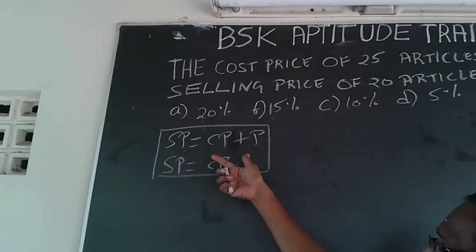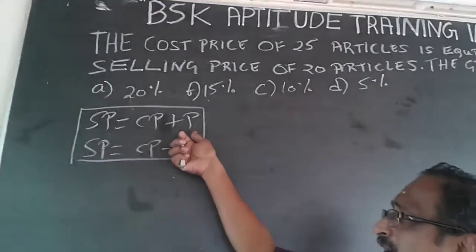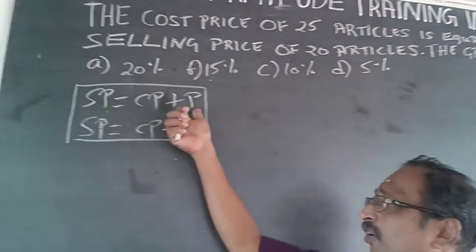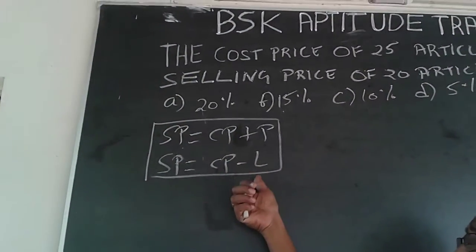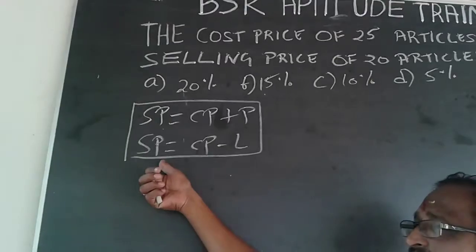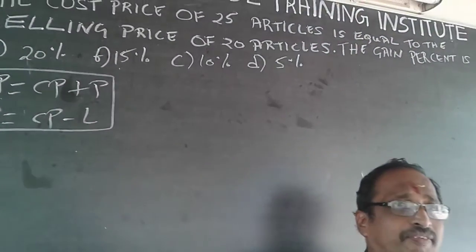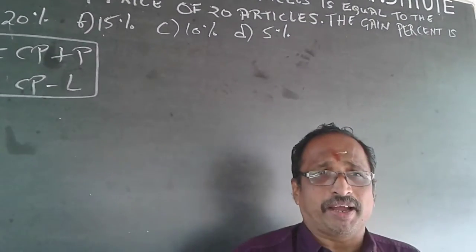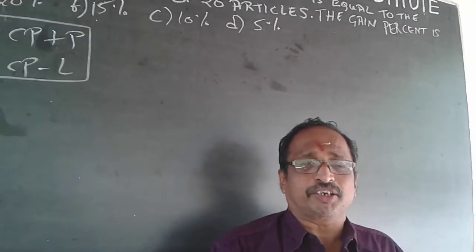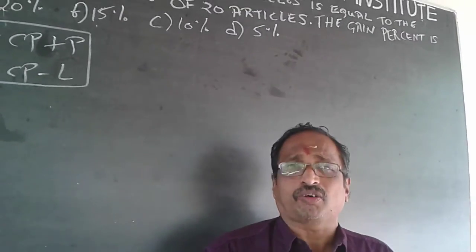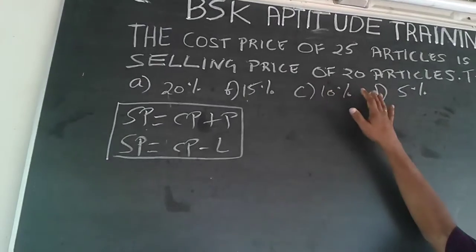For example, suppose an article costs 10 rupees and I want to make a profit of 1 rupee — I add 1 rupee, so the selling price will be more. If I make a loss, I reduce 1 rupee and the selling price will be less. By default, if I say make a profit of 10%, it is always on cost price.